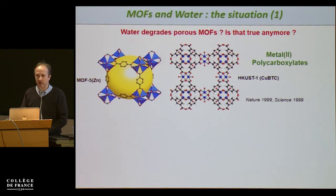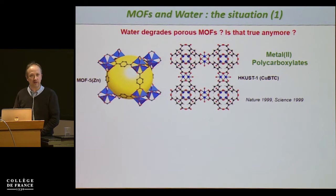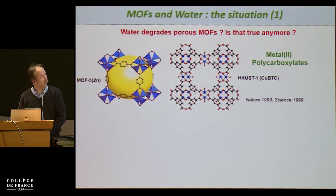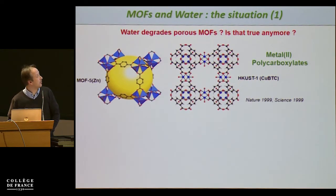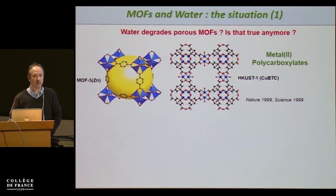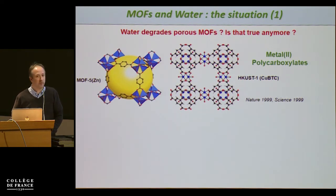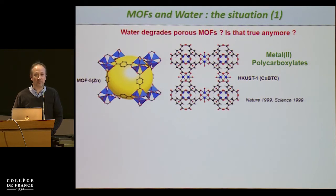The first big achievements in the field of MOF were obtained at the end of the 90s and early 2000s. Most of the materials discovered at this stage were based on metal 2+ cations — zinc and copper, for instance. We have two representative examples: MOF-5 and HKUST-1. But these materials were rapidly observed as being unstable to water, especially MOF-5, creating a lot of problems because industrial partners considered them almost unusable for most applications.